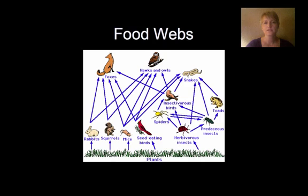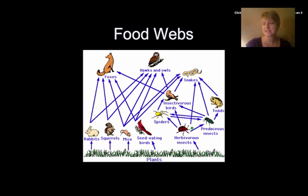One interesting thing about a food web is the arrows — they go up. This is basically to show that the grass goes into the rabbit, so the rabbit is eating the grass.